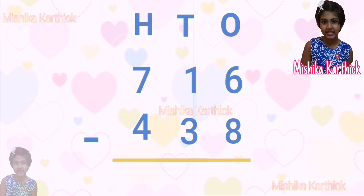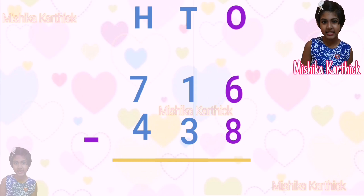Now, let's subtract the ones first. 6 minus 8 — we cannot subtract 6 ones from 8 ones. So, we will borrow 1 ten. 1 becomes 0, and 6 becomes 16. Now we can subtract: 16 minus 8 equals 8.